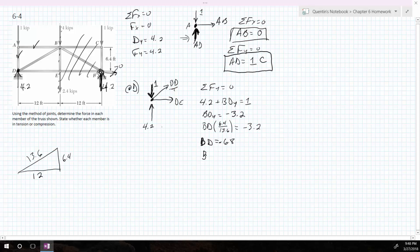So instead, I'm going to say BD is equal to 6.8. And I drew it away from the point. So away from the point means it's in tension. But I've got negative numbers. Therefore, it's in compression. So BD is 6.8 in compression.